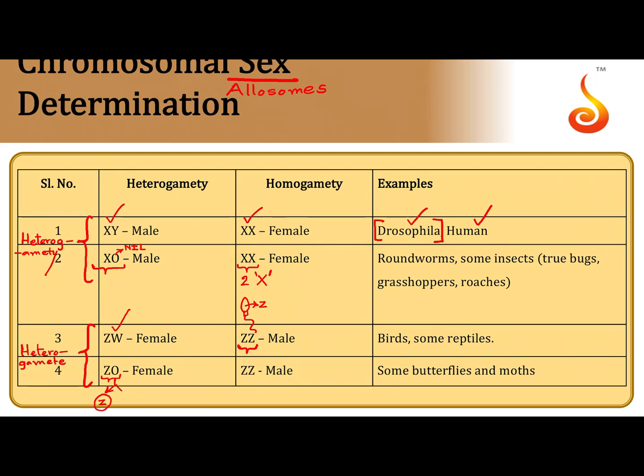In the Z0 system, the female has an unpaired Z chromosome, so she produces 50% of eggs with the Z chromosome and 50% with no sex chromosome (nil/zero), though the eggs will still have autosomes. The ZW/ZZ system is seen in birds and some reptiles, while the Z0/ZZ system is seen in butterflies and moths.